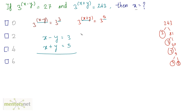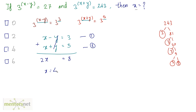We have two equations: equation 1: x minus y equals 3, and equation 2: x plus y equals 5. Solving simultaneously by adding both equations: x plus x is 2x, minus y plus y cancels, and 3 plus 5 is 8. So x equals 4. Therefore option C is the correct answer.